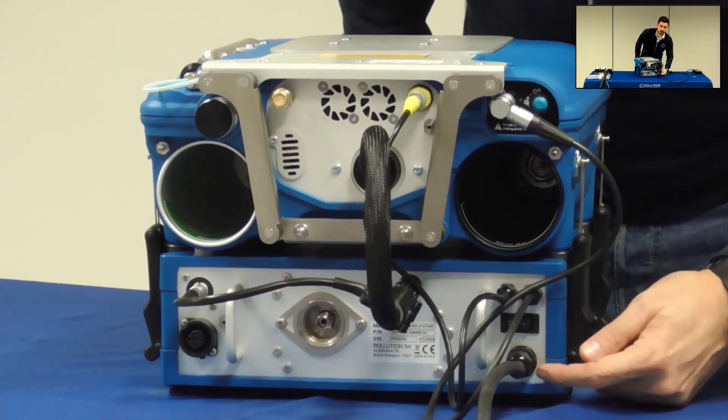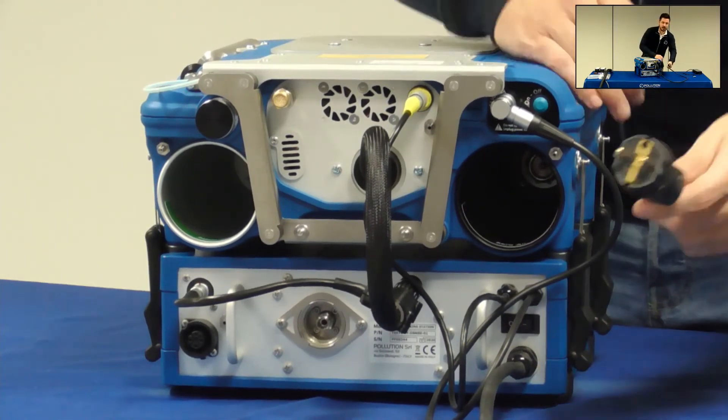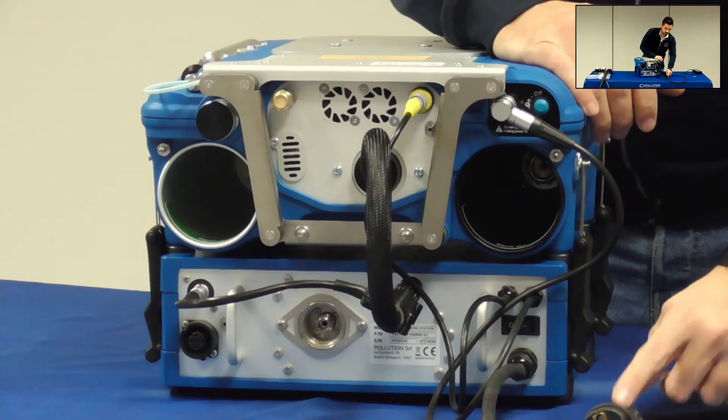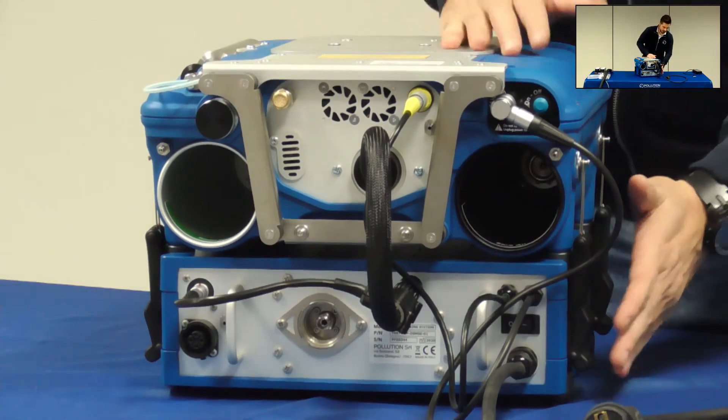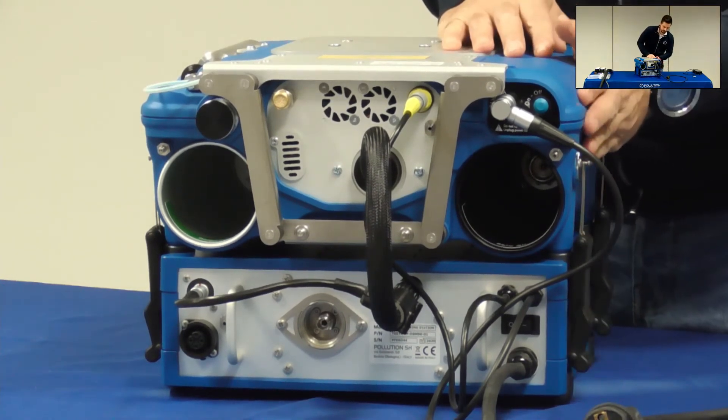Here on the left bottom side there is the power cable that will give electricity to the whole system. So electricity to docking, to Polaris and to the sampling line.